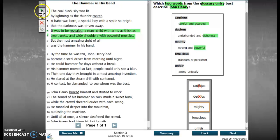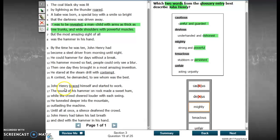Tenacious. Tenacious means stubborn or persistent. If you are persistent, that means you keep trying without giving up. So do we see anything that shows he keeps trying without giving up? Well, it says he braced himself and started the work. So that's just him starting. That's not keeping trying. The sound of his hammer on rock made a sweet hum while the crowd cheered louder with each swing.